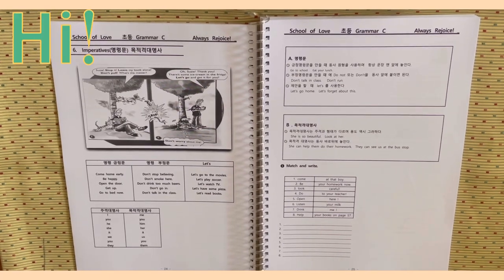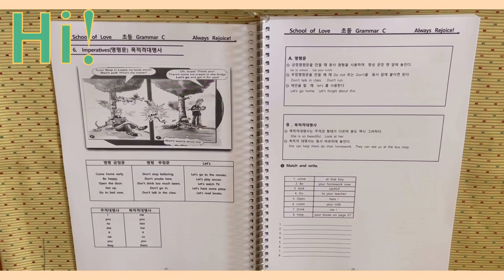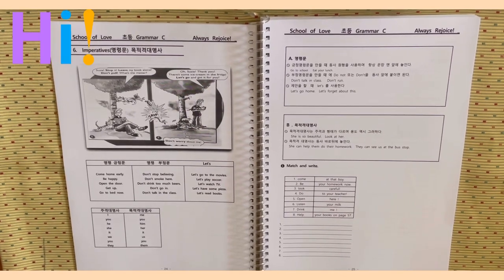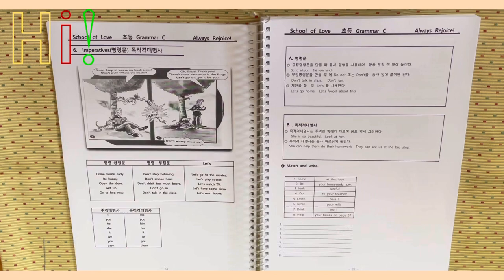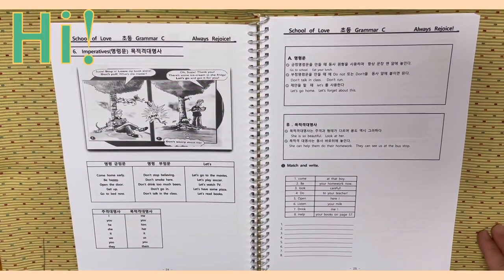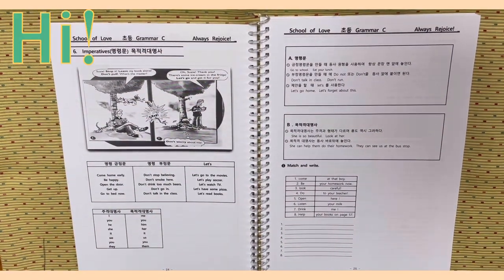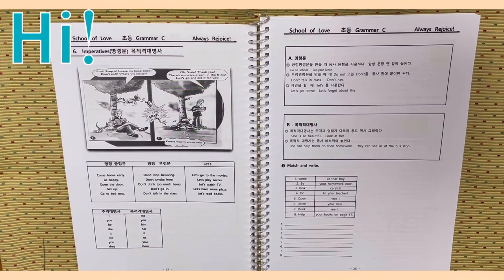A, 명령문. 긍정 명령문을 만들 때 동사 원형을 사용하며 항상 문장 맨 앞에 놓인다. Go to school. Eat your lunch. 부정 명령문을 만들 때 do not 또는 don't를 동사 앞에 붙이면 된다. Don't talk in class. Don't run. Don't smoke. Don't drink. 제안을 할 때 let's를 사용한다. Let's go home. Let's forget about this.